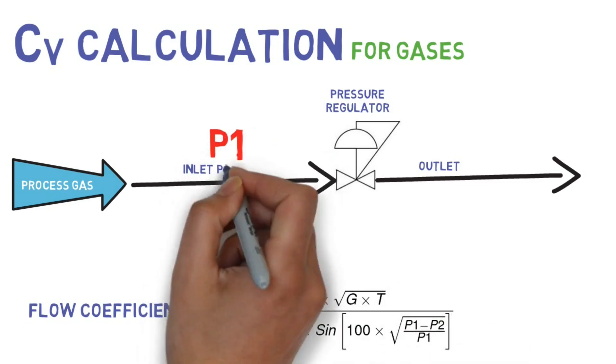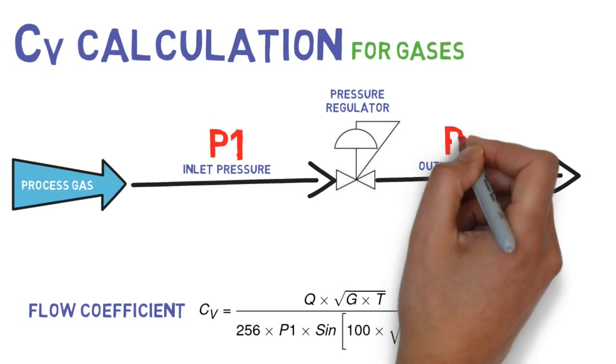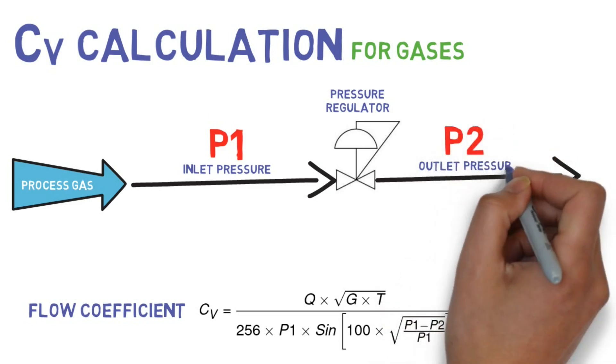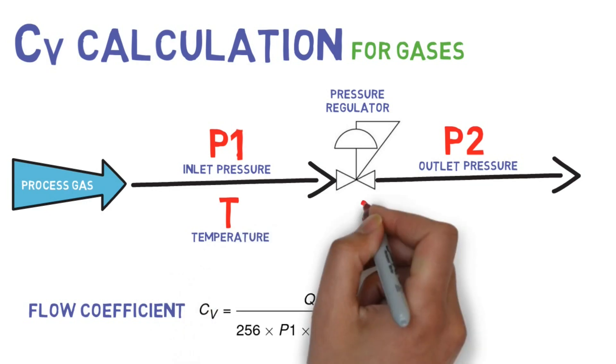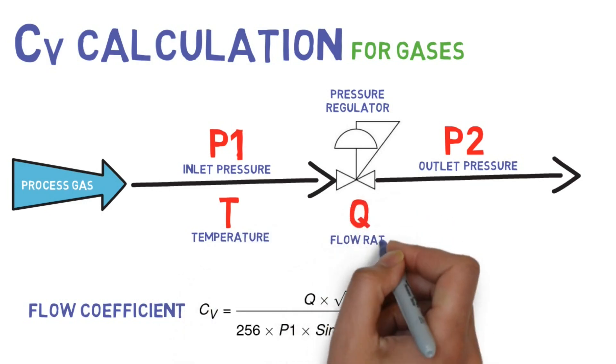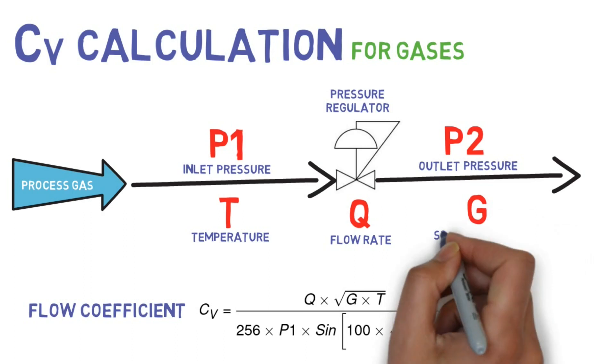P1 is inlet pressure. P2 is outlet pressure. T is temperature. Q is gas flow rate. G is specific gravity.